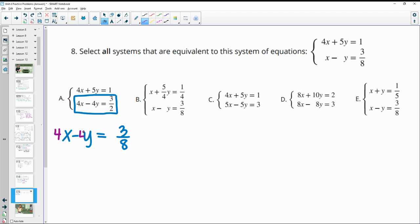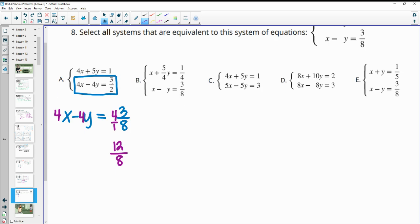So this one was x minus y equals 3/8. And we can see that now we have a 4x, which means that they multiplied everything by four. So 4x minus 4y is good. So then we want to look at this fraction here. So 4 times 3 is 12 over 8. And you want to check, is 12 over 8 the same as 3 over 2? You can do that by typing it in your calculator and seeing that they both equal 1.5. You can also simplify this fraction by dividing both by 4 and seeing that 12 divided by 4 is 3 and 8 divided by 4 is 2. So this one is equivalent.